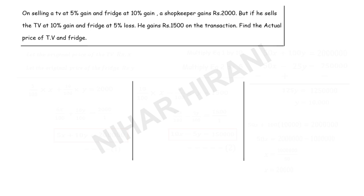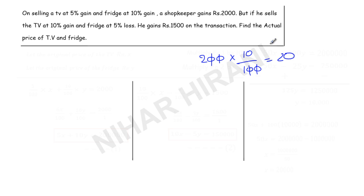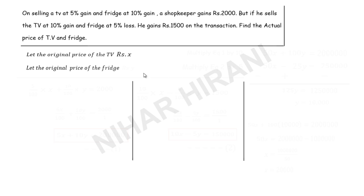First I want to explain something you have already studied. For example, if someone says they are selling something for Rs. 200 and giving a 10% discount, how do you find 10% of 200? That is 200 times 10 over 100, which gives 20. If you understand how to find 10%, 5%, or 20% of something, then it will be very easy. So let us suppose the price of a TV is Rs. x and the price of a fridge is Rs. y.